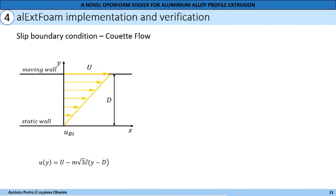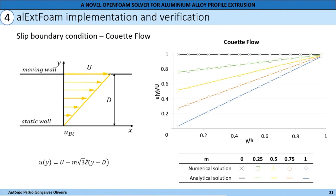To verify the slip boundary condition implementation, a Couette flow study was performed, where there is a moving and a static wall, with the slip boundary condition prescribed using different friction coefficients. Also, a constant value for effective strain rate was used, and the analytical solution is shown in the graph. It can be seen that the numerical solution is in agreement with the analytical one. For a friction coefficient of 0, there is full sliding, and with the increase of the friction coefficient, there is a decrease of the velocity at the wall. For a friction coefficient of 1, there is full sticking, as expected.